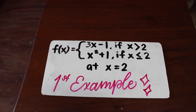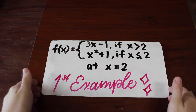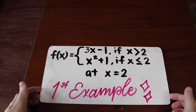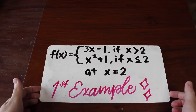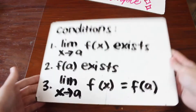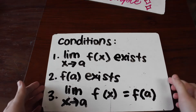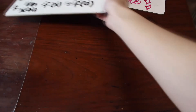So now we'll be having some examples. The first example is a piecewise function. f of x equals 3x minus 1 if x is greater than 2, and f of x equals x squared plus 1 if x is less than or equal to 2. We need to remember that in order for a function to be continuous, it needs to satisfy the three conditions discussed earlier.